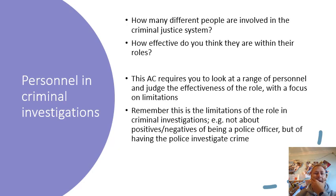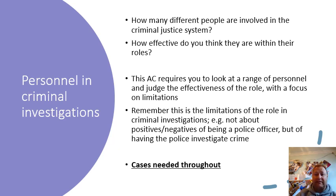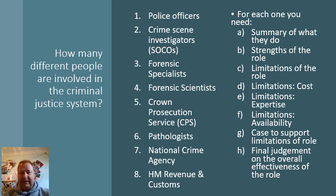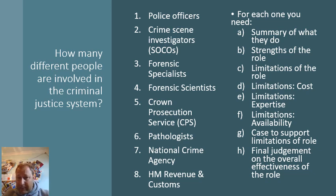The key thing here is cases — you have to do thorough research to show the limitations. The personnel we need to cover are: police officers, crime scene investigators, forensic scientists, forensic specialists, the CPS, pathologists, the National Crime Agency, and HM Revenue and Customs. For each, you need eight things: what they do, strengths, limitations, a case, and a final judgment.